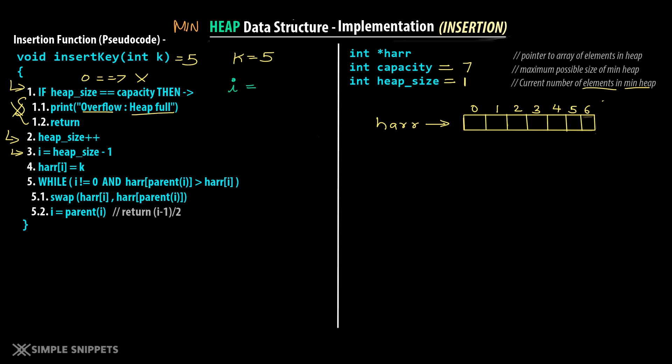We want to insert 4. We check if heap size equals capacity: heap size is 2, capacity is 7 — not equal. So again we proceed. Heap size plus plus makes it 3. i equals heap size minus 1 equals 2. h array of i, which is h array of 2, equals k which is 4. So we insert the new value 4 at index position 2.